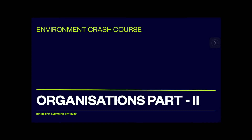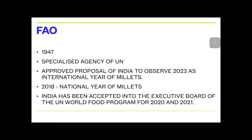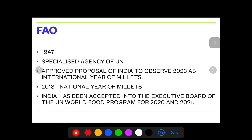Welcome to my YouTube channel. Here we are going to deal with the second part of Organizations. Please grab your pen and paper and let's continue. Food and Agricultural Organization came about in the year 1947.